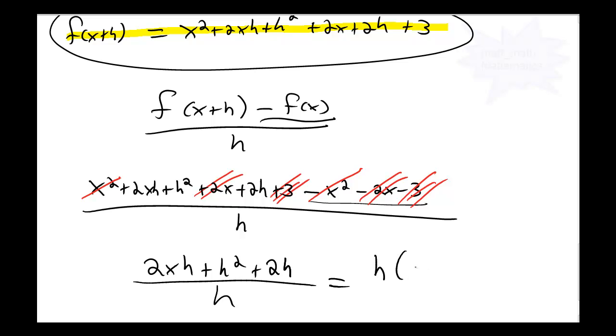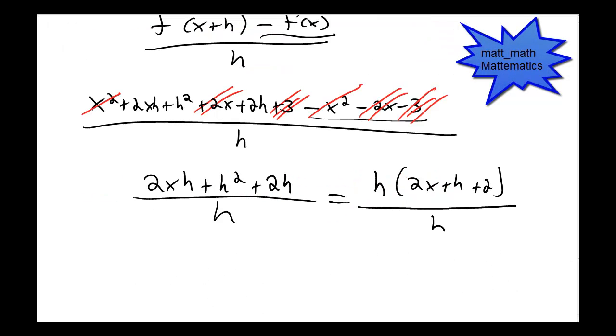Factoring out the common h term I have h times 2x plus h plus 2. All of this is divided by h. An h on top and an h on bottom cancel, leaving me with my final answer of 2x plus h plus 2.